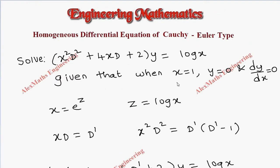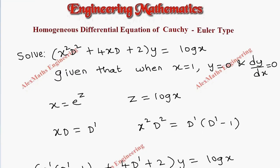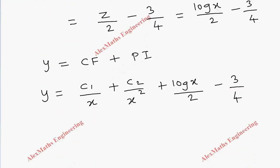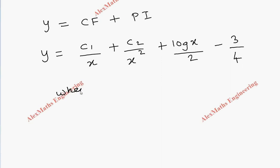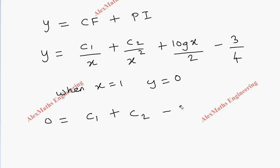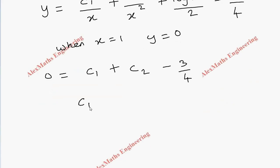In the question, they gave conditions: when x equals 1, y equals 0, and dy/dx equals 0. Applying the first condition, substituting x equals 1 and y equals 0: 0 equals C1 (since 1/1 is C1) plus C2 (since 1/1 squared is C2). Since log 1 is 0, the PI gives minus 3/4. So C1 plus C2 equals 3/4. This is equation 1.